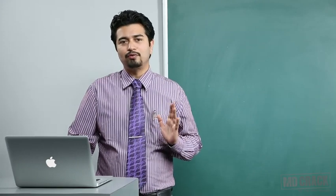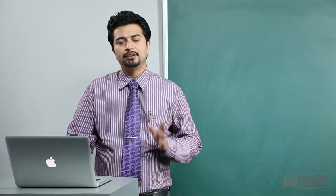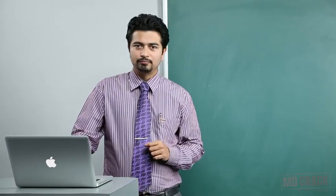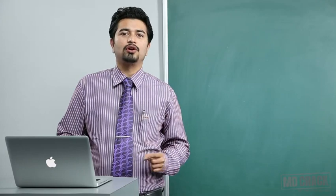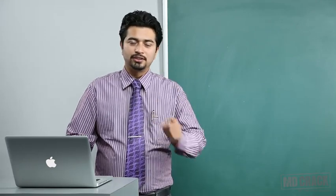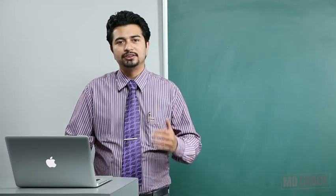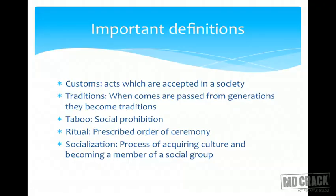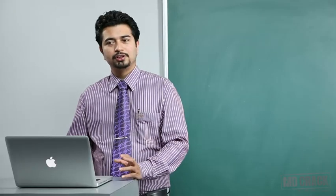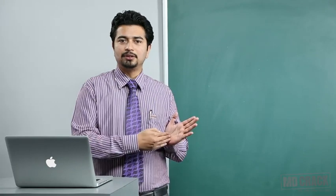When that same custom is carried on by your children ten generations down, your tenth grandchild calling relatives on the same day — you started a custom, he has a tradition. Customs passed for generations and generations are then called traditions. Taboo is a socially prohibited behavior; if a taboo is broken, society may have strong objections — what constitutes a taboo depends upon the society. Ritual is a prescribed order of ceremony.